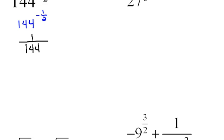So if I rewrite this as 1 over 144 to the 1 half power, now I don't have to have the negative exponent anymore because I've corrected its position.